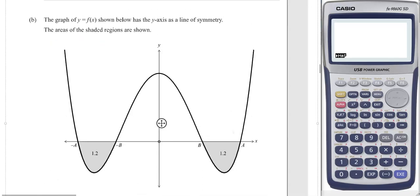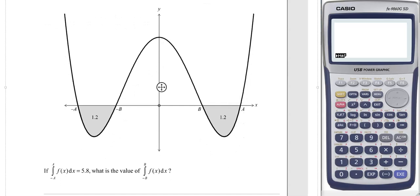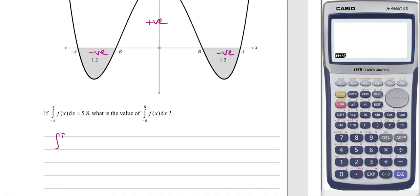On part b we've got this graph and we're told it's symmetrical. We've got these two parts underneath which would be 1.2 each. If we integrated from minus a to a we would get 5.8. This bit here would count as negative, above the graph as positive, and below as negative. The positive bit in the middle is the integral from minus b to b. If we did that and took away 1.2 twice, that would give us 5.8. Therefore, that integral is 8.2.